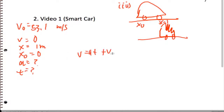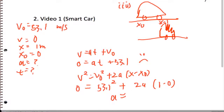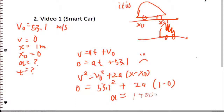Plugging numbers in: for the first equation, zero equals A times unknown T plus 53.1 — can't do anything with that. Trying the second equation: V-squared equals V-naught-squared plus 2A(X minus X-naught), so zero equals 53.1-squared plus 2 times A times (1 minus 0). Isolating acceleration, I'm getting about negative 1,400 meters per second squared.